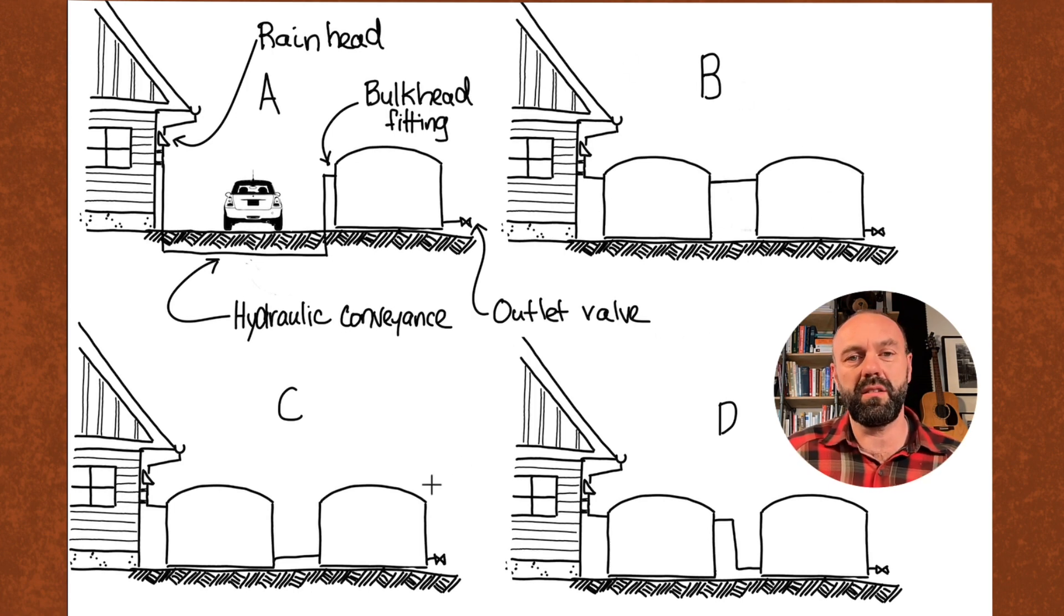The next system would be system C. This system would be a kind of unified system, so tank one would fill up at the same time as tank two. Basically, you've connected it with a bulkhead fitting on each side, and the tanks will fill and drain simultaneously. This is probably the most practical solution and the one that you're most likely to use. So you'd have a bulkhead fitting here, here, here, and here.